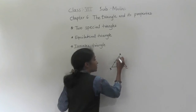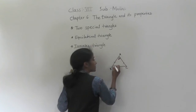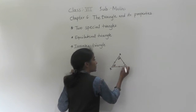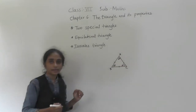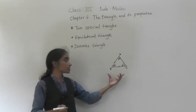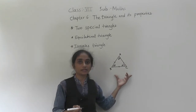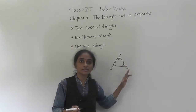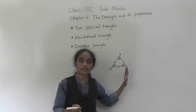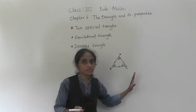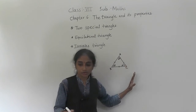All sides are equal and each angle is 60 degrees. So this triangle is called an equilateral triangle — all sides and all angles are equal, and each angle is 60 degrees.